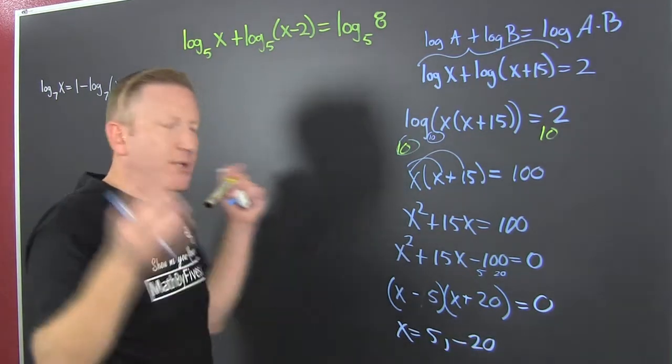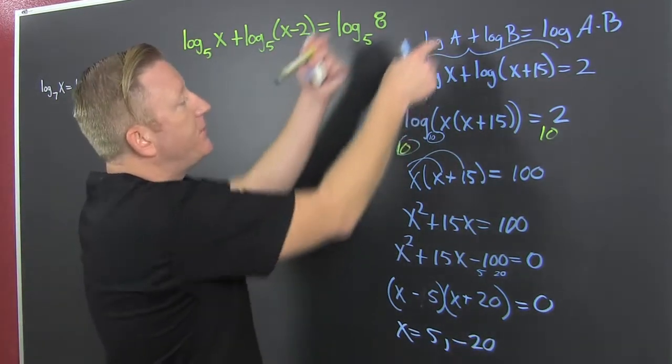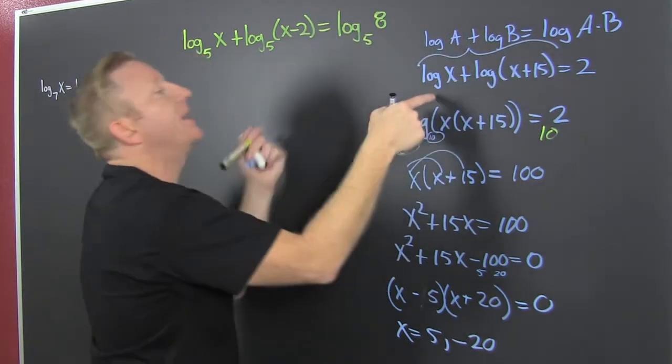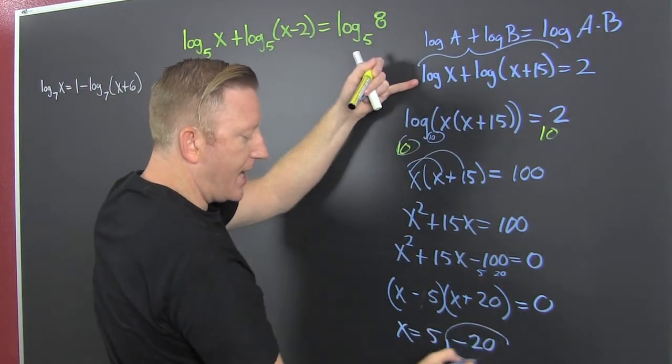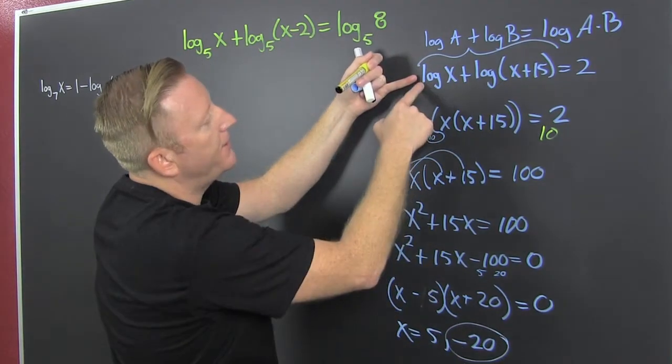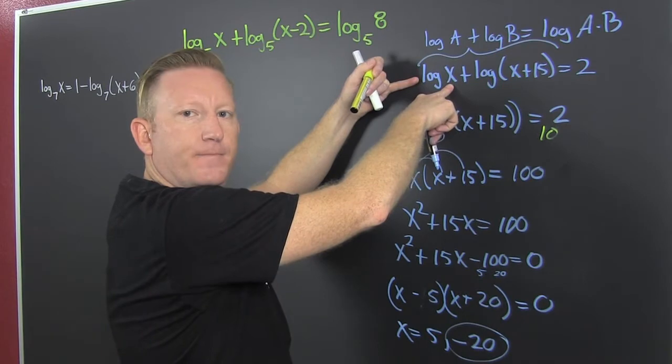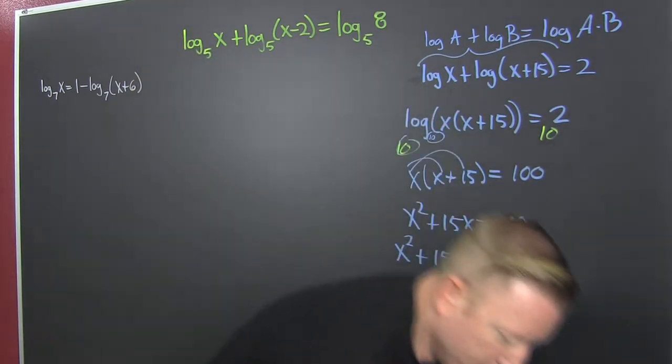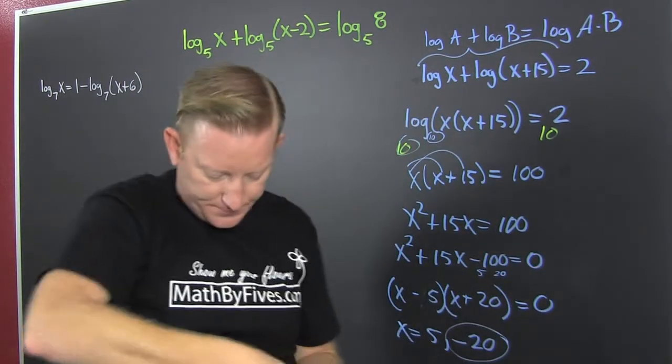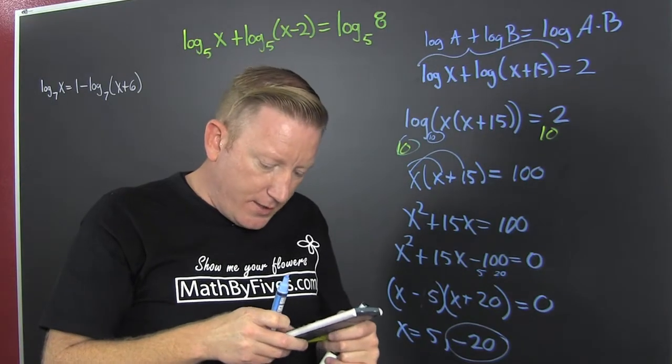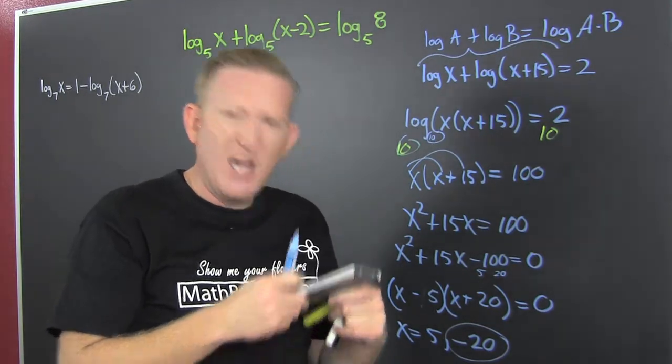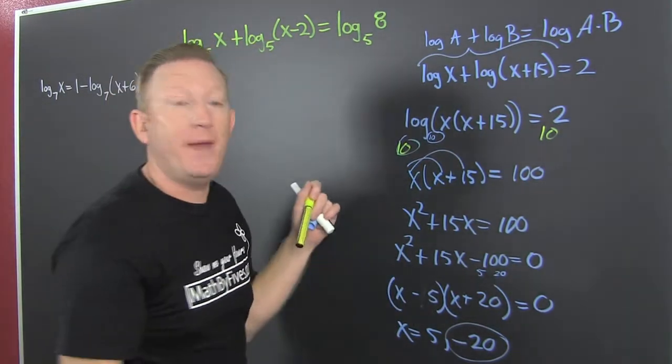Now what? You have to check it. So we put it up into the original. If we put 20 up there, can you take the log of a negative number? Try it. Log of minus 20. It's a domain violation.